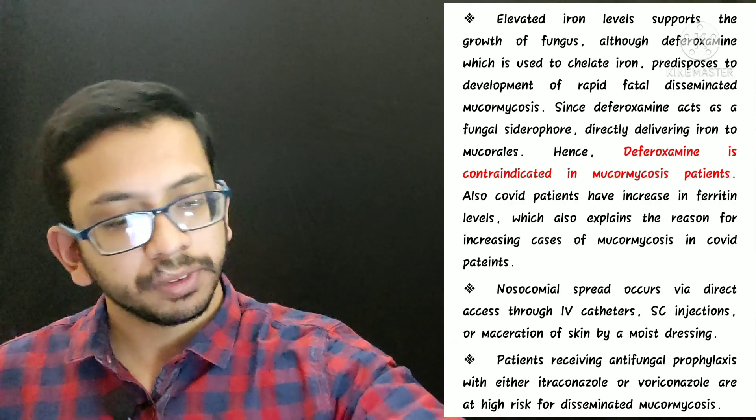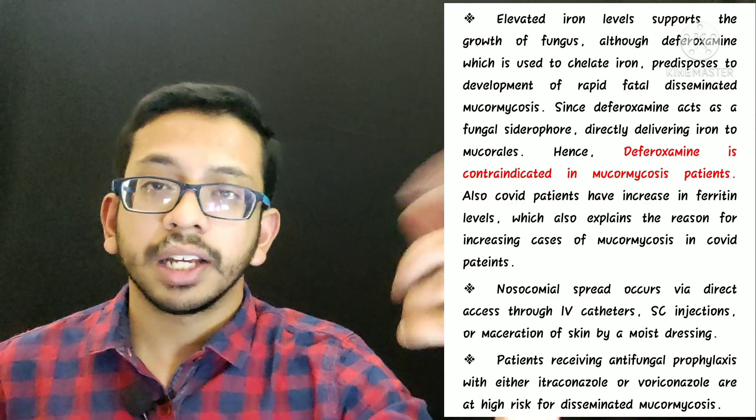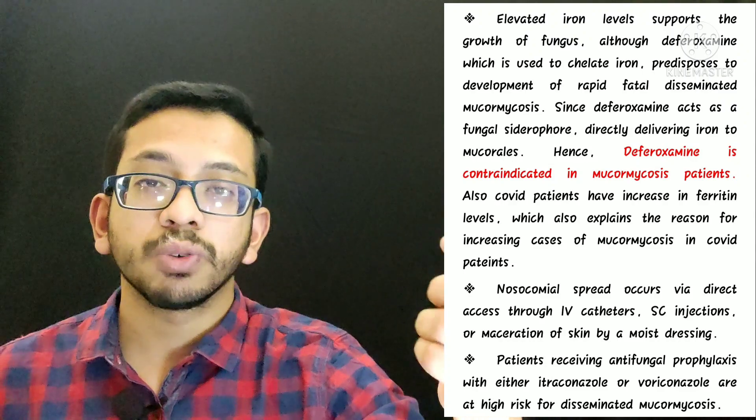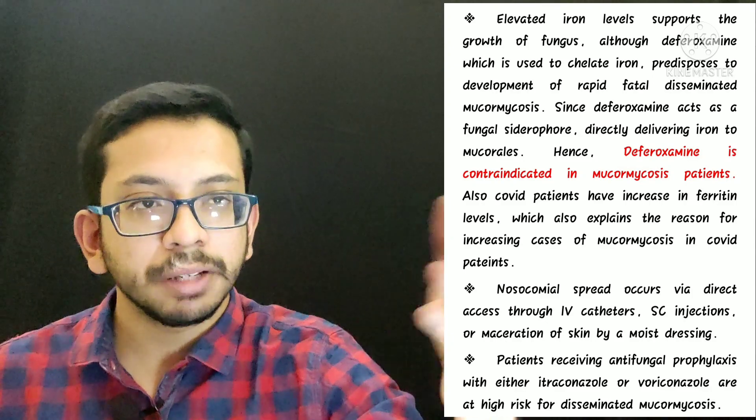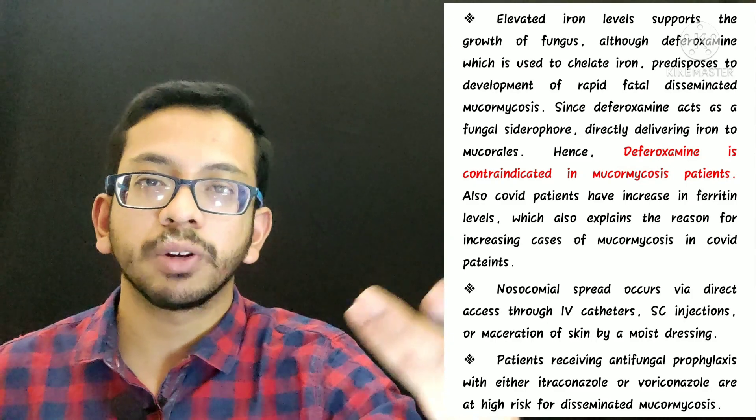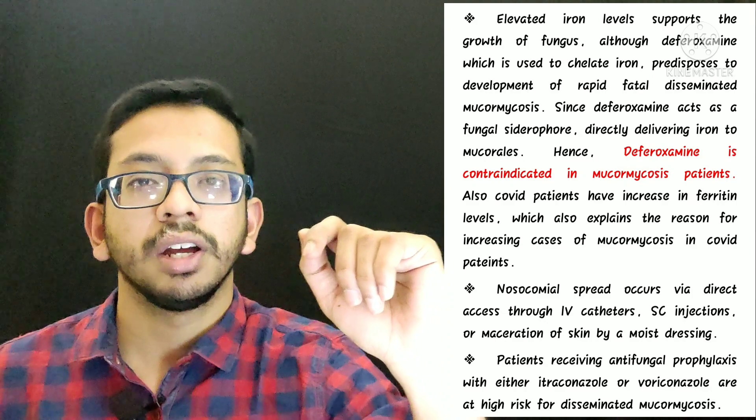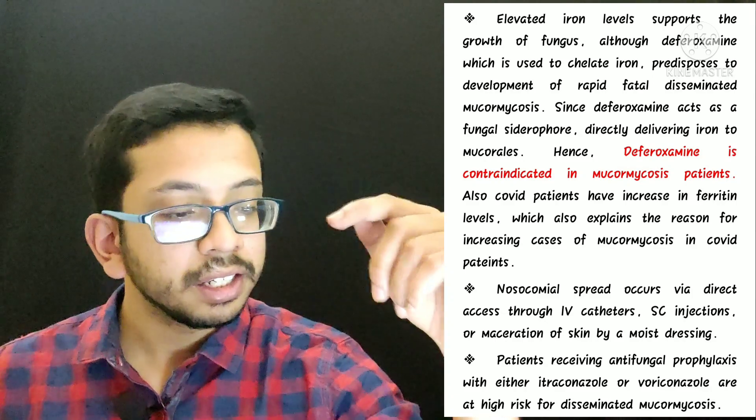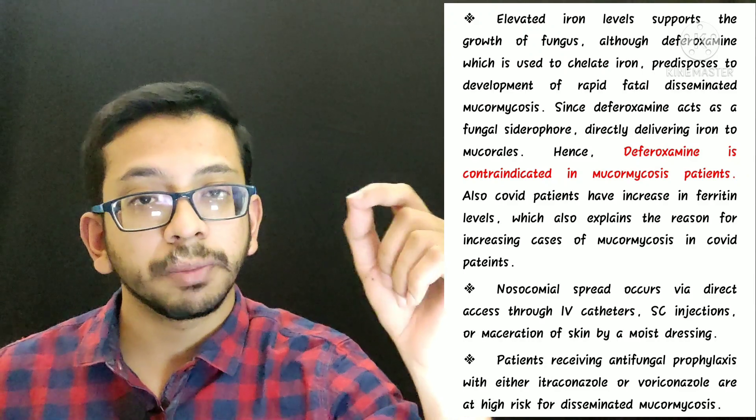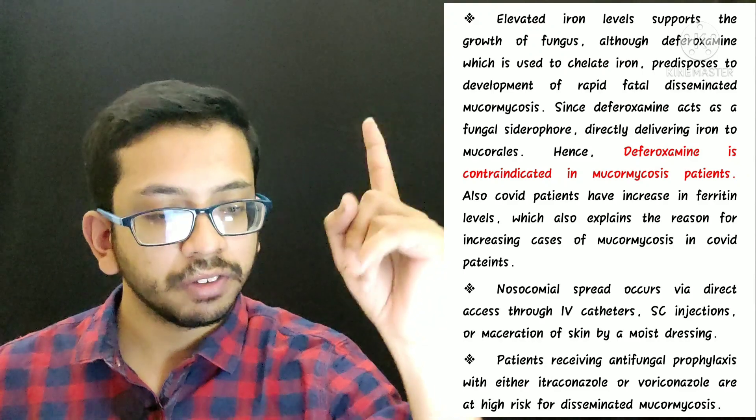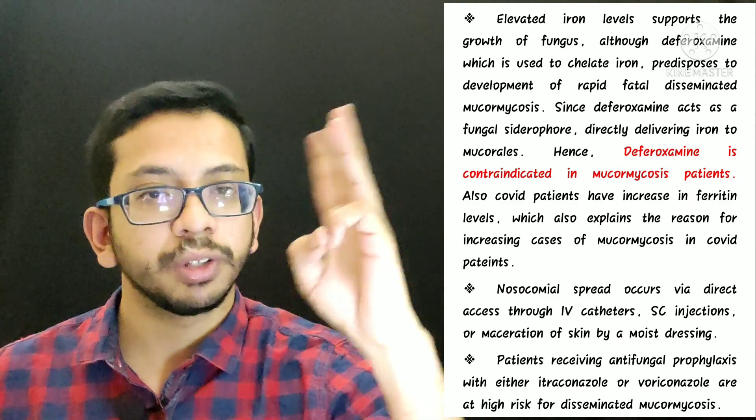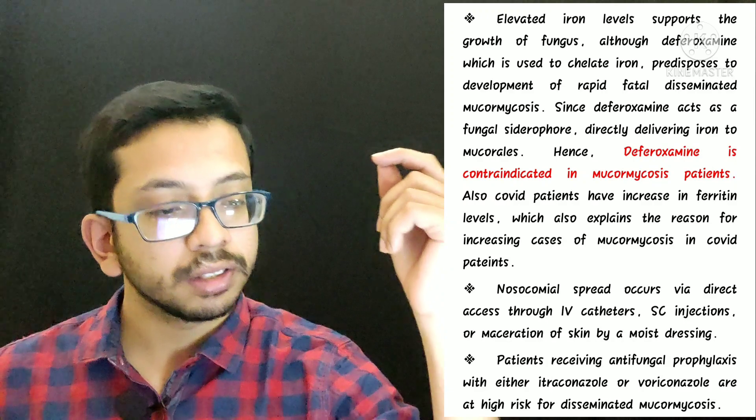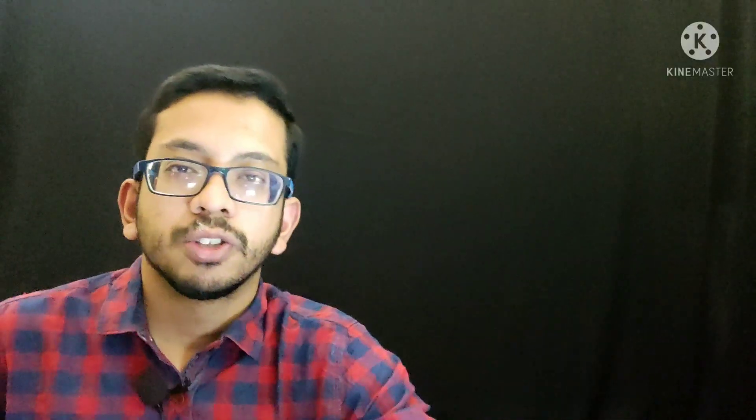Another very important thing: you may think that if a patient is receiving antifungal prophylaxis with itraconazole or voriconazole, then maybe the chance of mucormycosis is less. But again, this is not the fact. If the patient is receiving antifungal therapy through itraconazole or voriconazole, then he is again at a very high risk for disseminated mucormycosis. So it is very important: deferoxamine, itraconazole, voriconazole - they don't help, they make the situation even more worse. These two things are very important and you should keep it in mind.